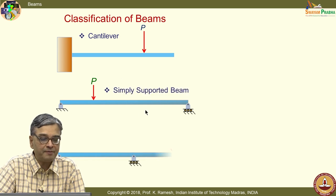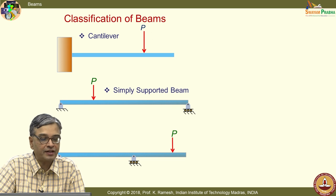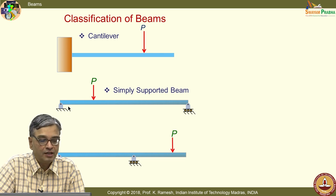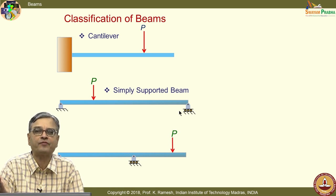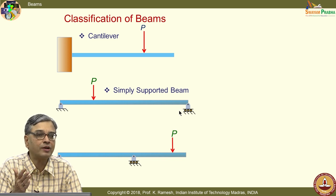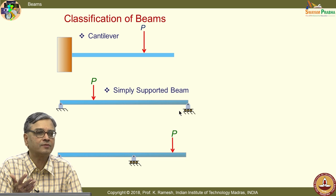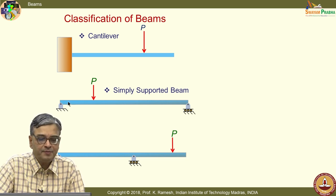This beam is called simply supported. You should be able to identify what kind of end support is used. Please note that this is only a symbolism — you should know how to interpret the symbols. The striking difference between the two supports is in the rollers. There are many ways books represent these supports, and I have tried to show different forms so that you can interpret the symbolism from any book. Such a beam is very simple to analyze.